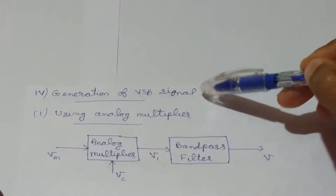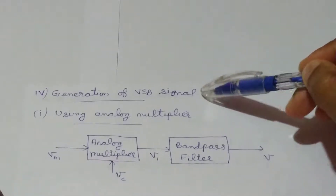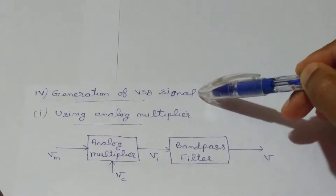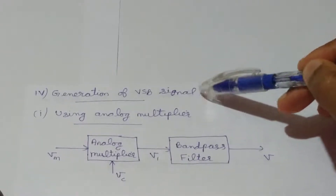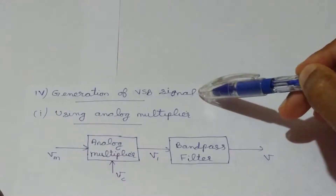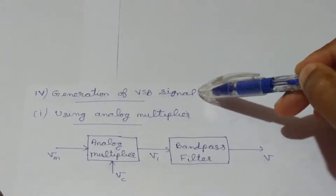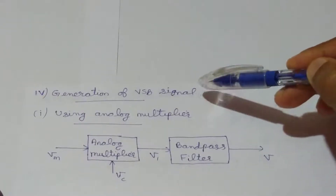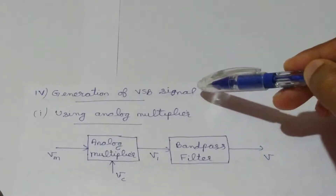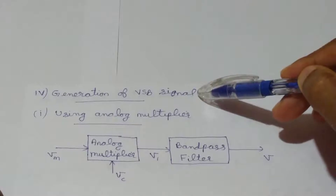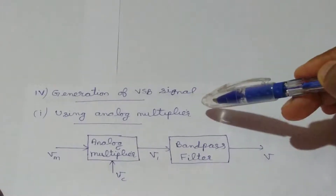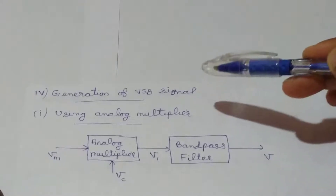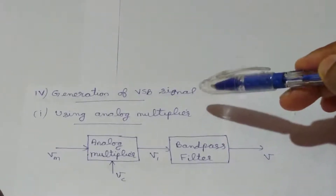In the vestigial sideband modulation technique, we are transmitting one sideband completely along with a fraction of the other sideband. So we have two cases: in one case we will transmit the lower sideband completely and a vestige of the upper sideband, and in the other case we will transmit the upper sideband completely along with the vestige of the lower sideband.